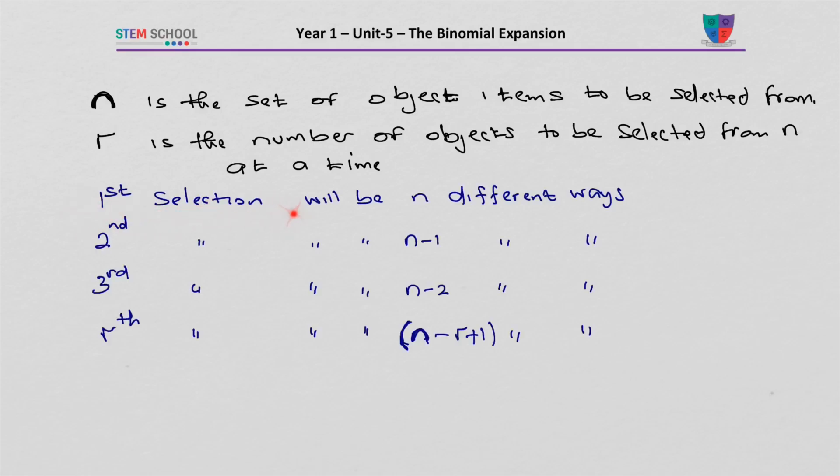So the first selection will be n different ways because there are n of them. The second will be n minus 1 different ways. The third will be n minus 2. Notice the 3 and 2. Notice the 2 and 1.